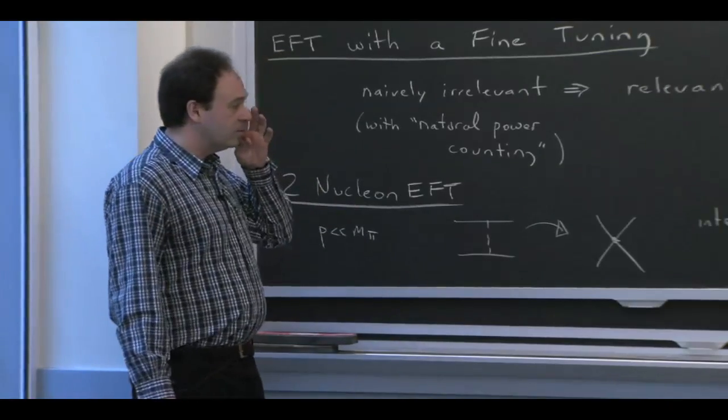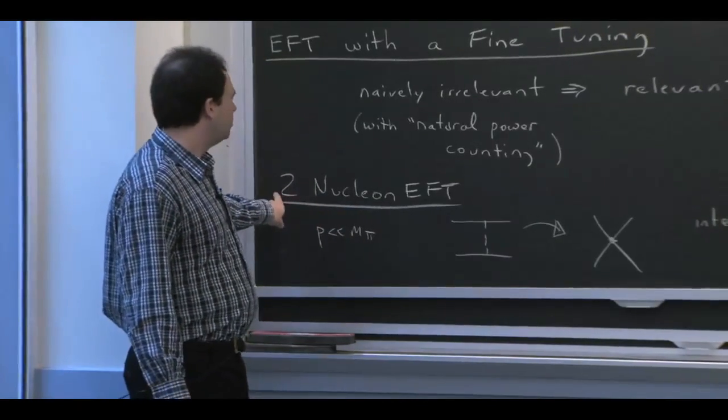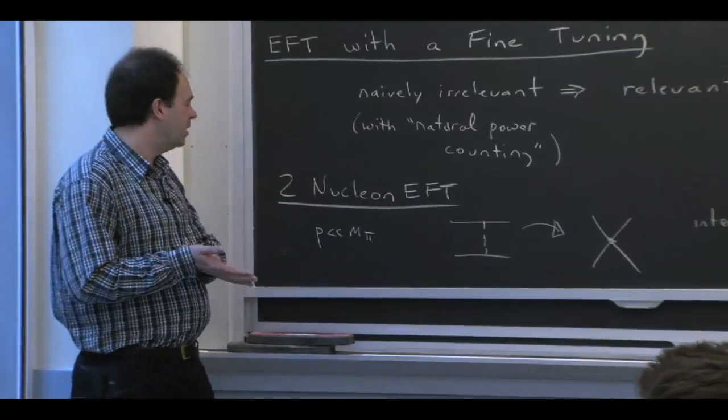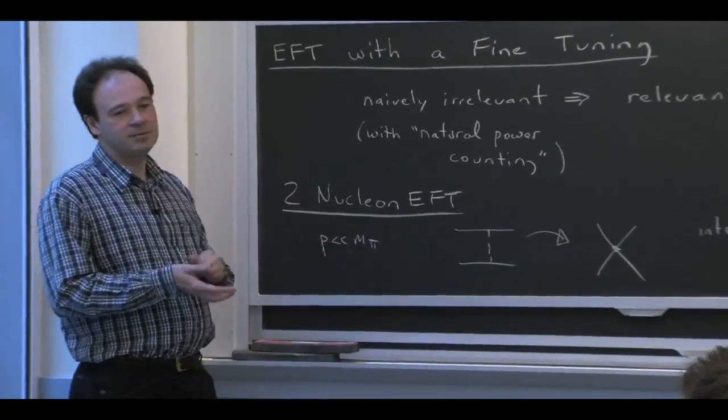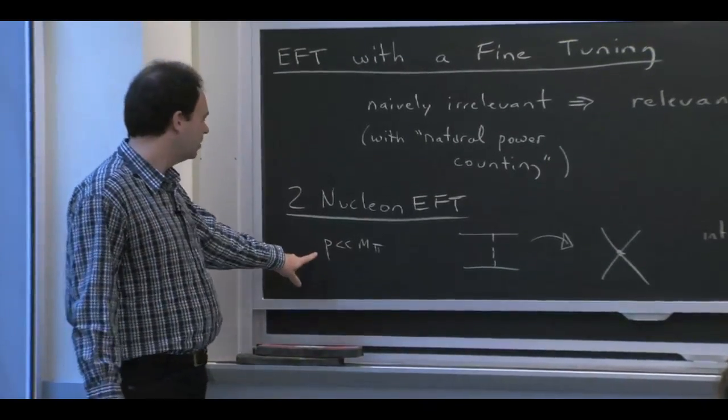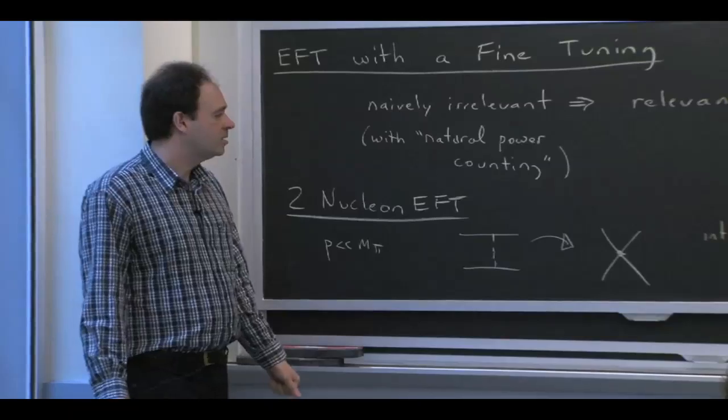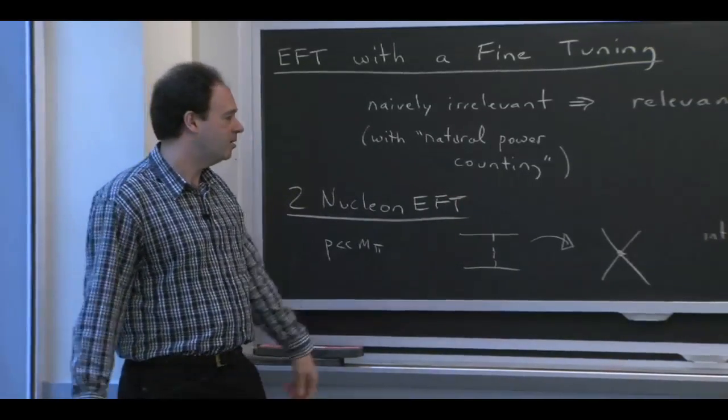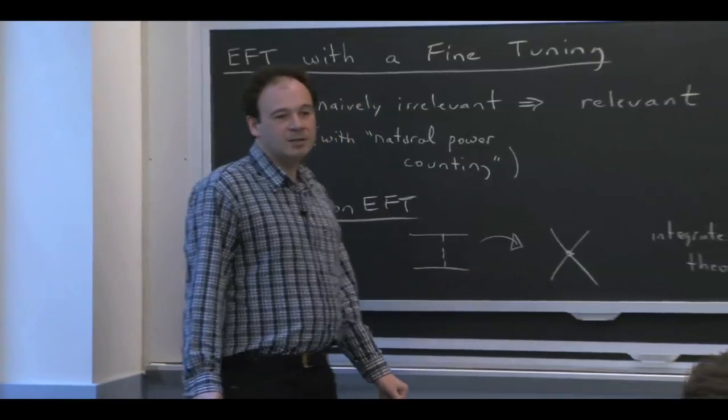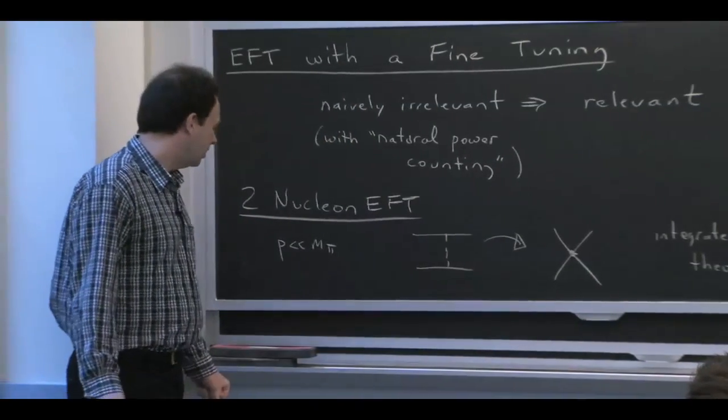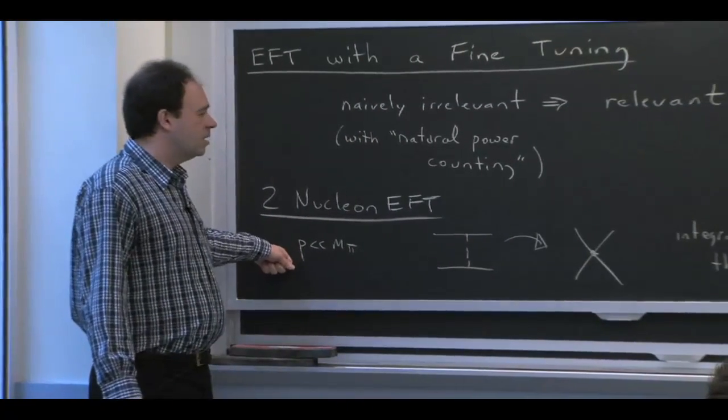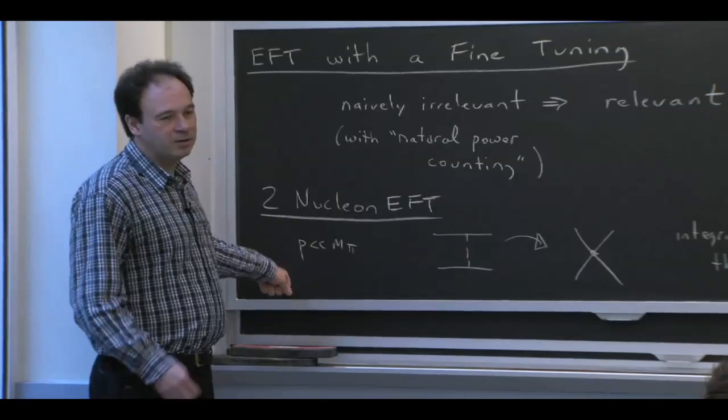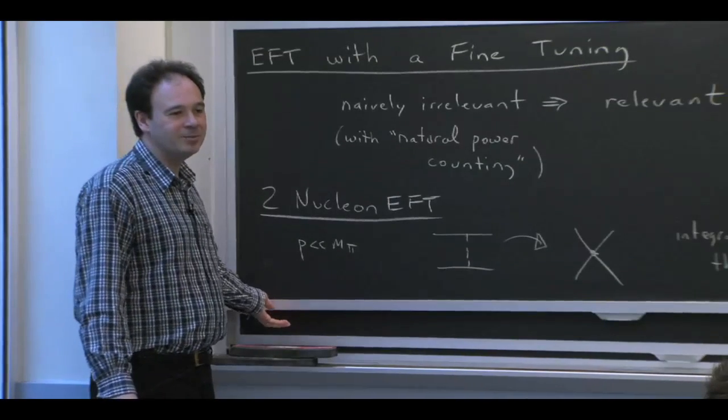So it'll be a little non-trivial, but we'll be doing this in the context of two-nucleon effective field theory. And the advantage of this is that the nucleons are going to be non-relativistic. So p is going to be much less than m pi. It's going to be a very simple theory. Everything that's an exchange particle gets integrated out. It's just a theory of contact interactions and derivatives and contact interactions. And because it's non-relativistic, we can actually calculate all the loops to all orders and perturbation theory. And we'll do that in a minute.